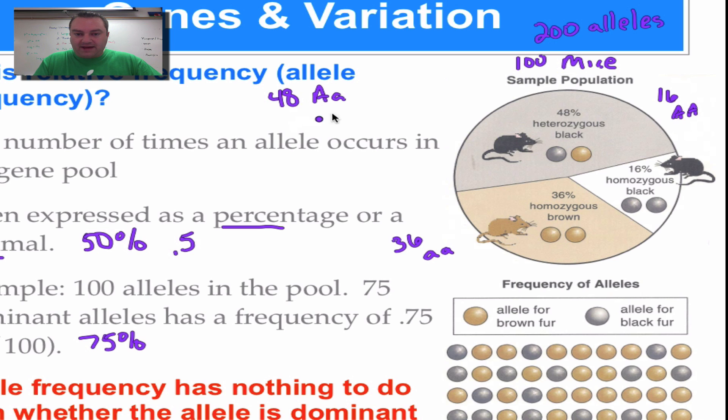All right. So let's figure out how many big A alleles that we have. Well, these 48 have 48 big A's. And then these 16 over here, they've got two. So 16 times two is 32 big A's. So if you do your math, that comes out to 80. All right. These individuals down here, they don't have any big A's. So we're not going to pay attention to them.